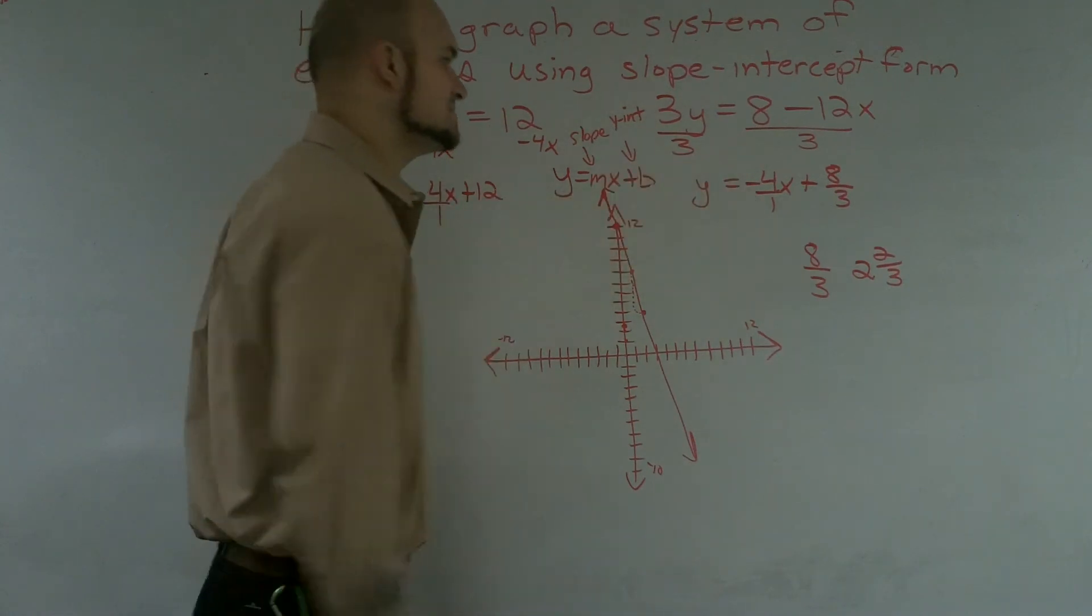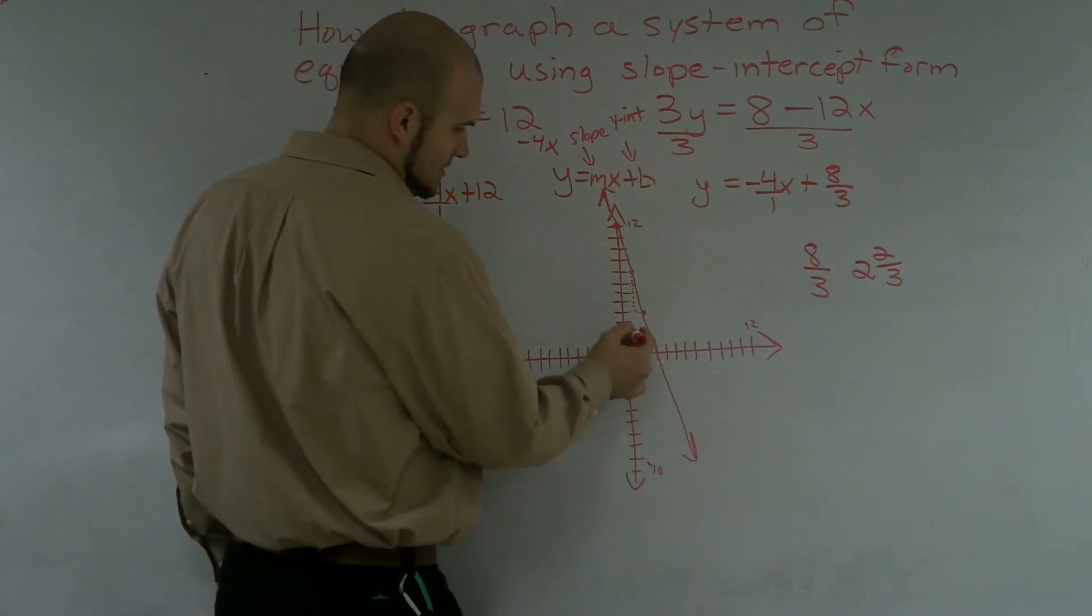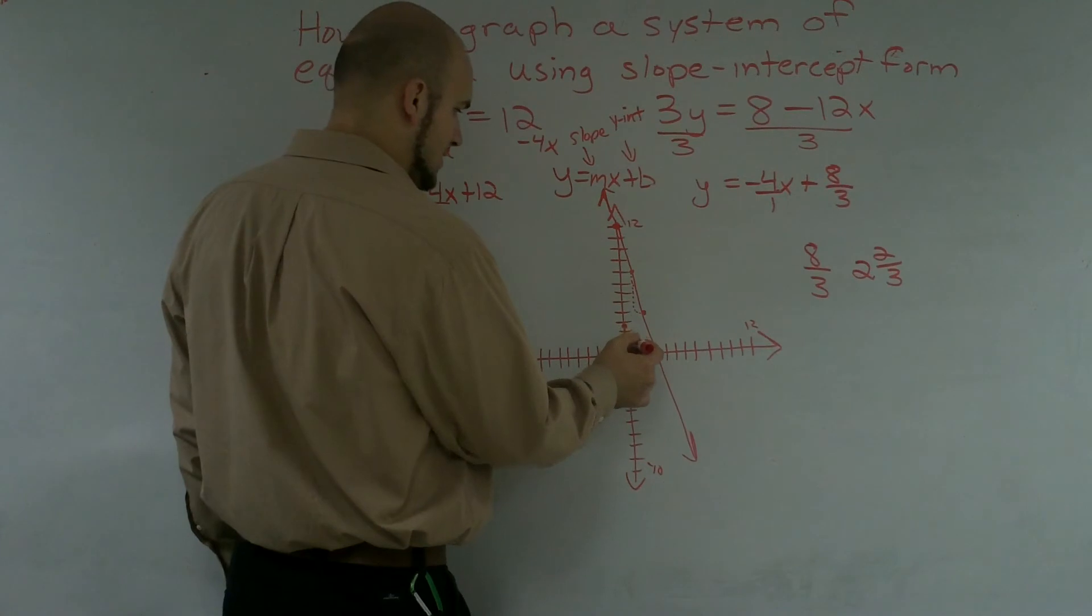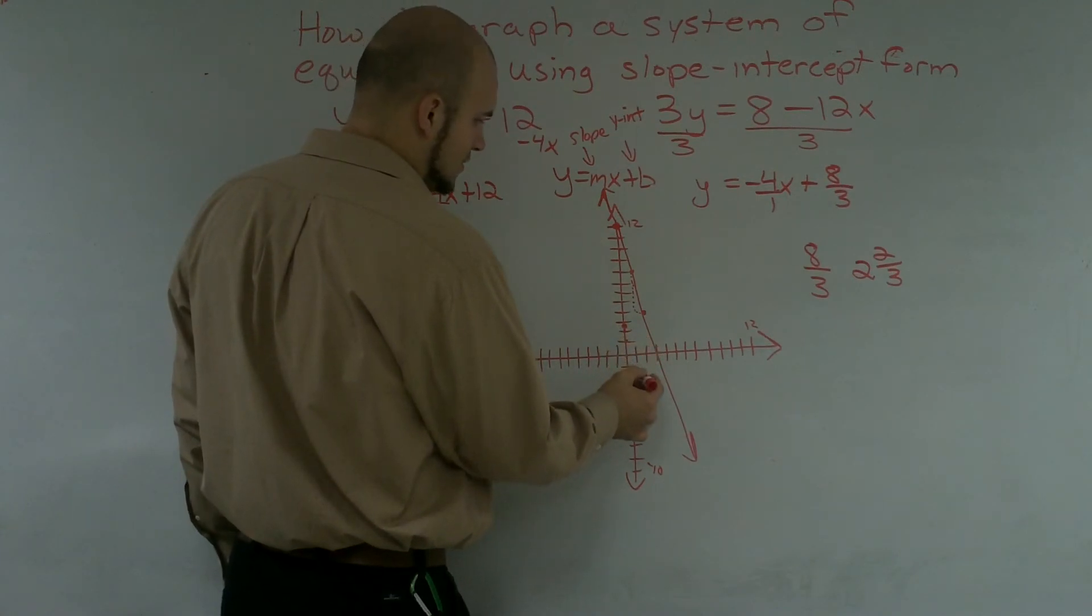Then, again, I've got to follow my same slope. So I'm going to go down 4, so it would give me 1, 2, 3, 4, over 1.